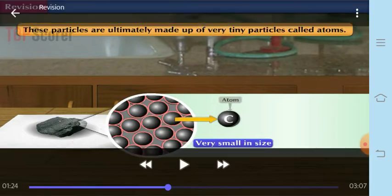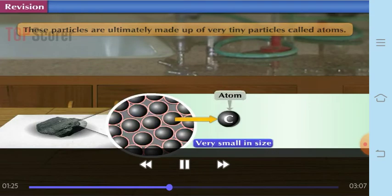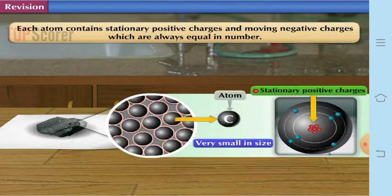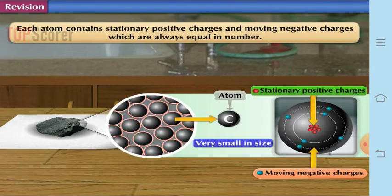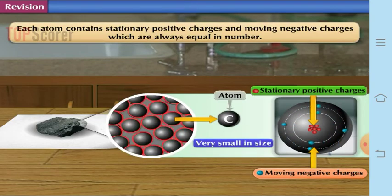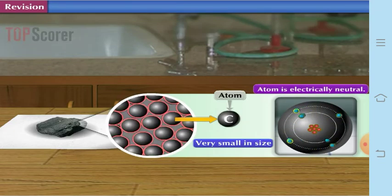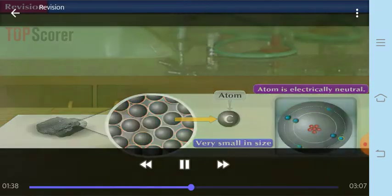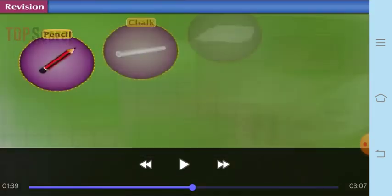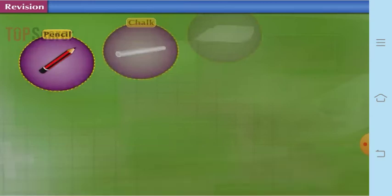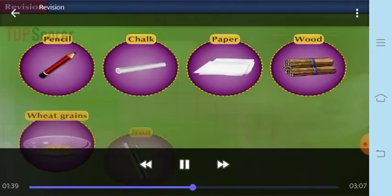An atom consists of stationary positive charges and moving negative charges which are also called electrons. Therefore, since the positive and negative charges are balanced in an atom, an atom is said to be electrically neutral. All these objects which you see over here are electrically neutral.